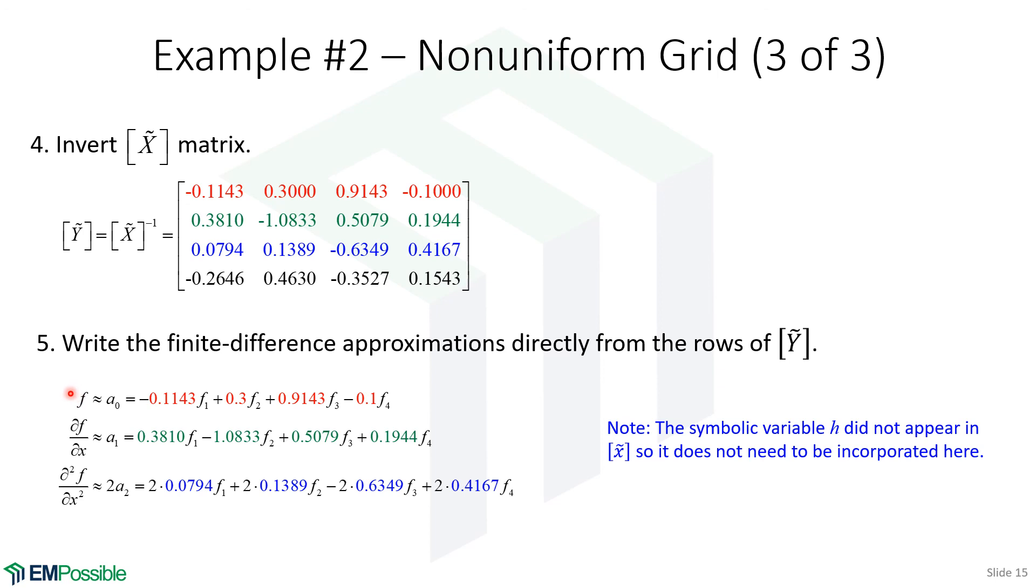From the Y matrix, we can write our finite differences. The first one, we're just interpolating the function. That's the first polynomial coefficient. We're just reading off the numbers here. H is incorporated in here, so we just use those numbers multiplying F's. On the second row, this would be our first order derivative. We multiply those numbers by our F's, and we don't have to divide by H because H was already incorporated into the original coordinates. We didn't factor that out.